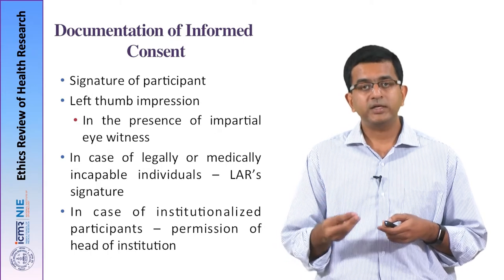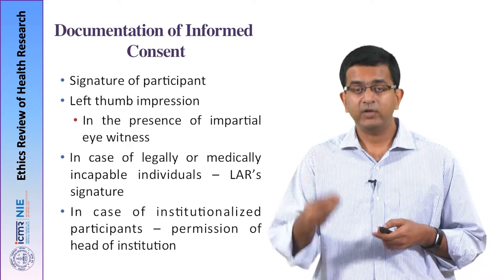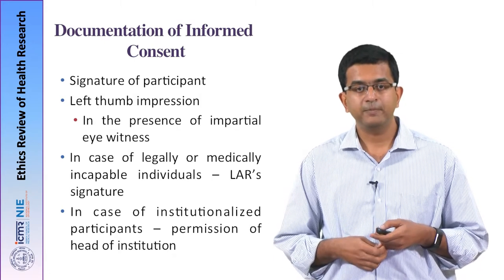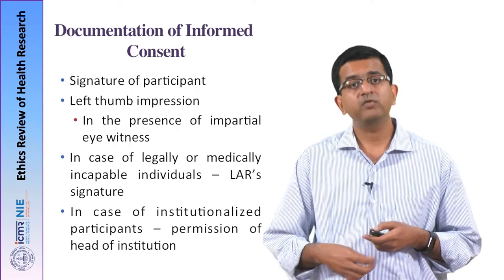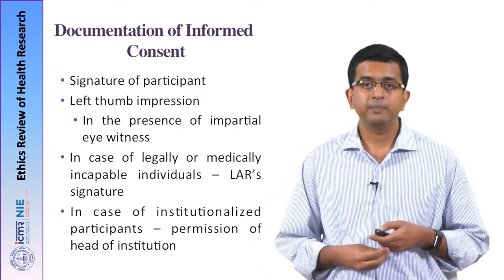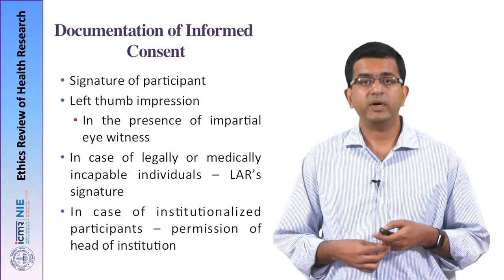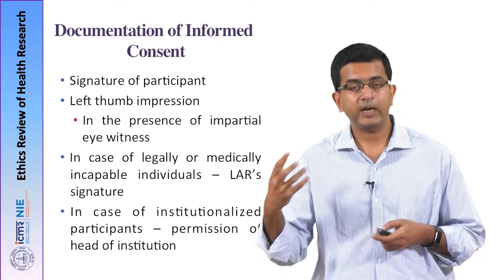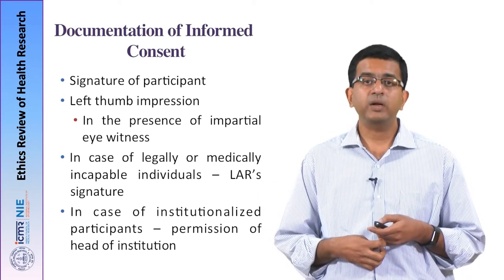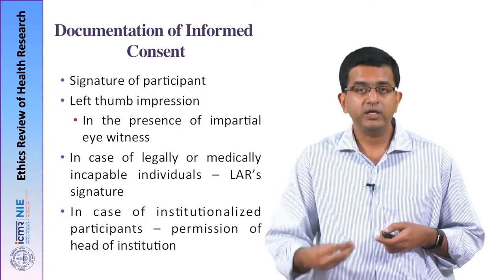In case the participant is legally or medically incapable of providing consent — either unconscious or lacking mental ability — legally acceptable representatives can sign on their behalf. If the legally acceptable representative also cannot read and write and is depositing a thumb impression, that process also has to be eyewitnessed. In case of institutionalized participants, like those from a prison or a residential school, permission from the head of the institution is also important, and they must sign the document giving permission for their wards to participate.